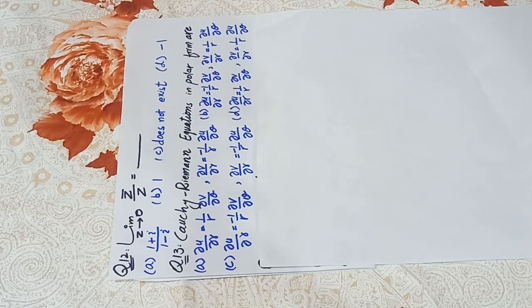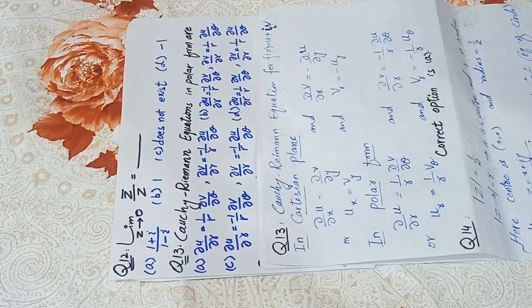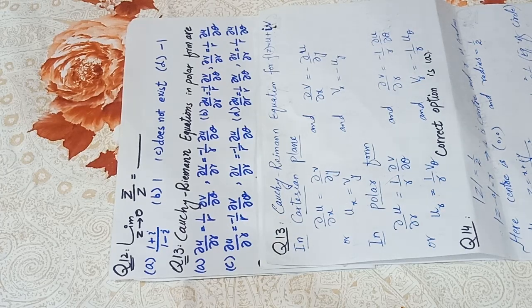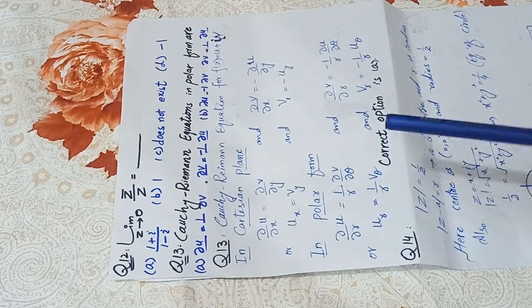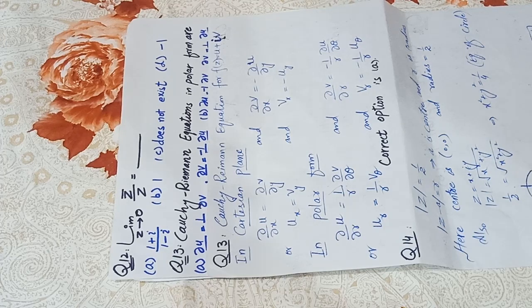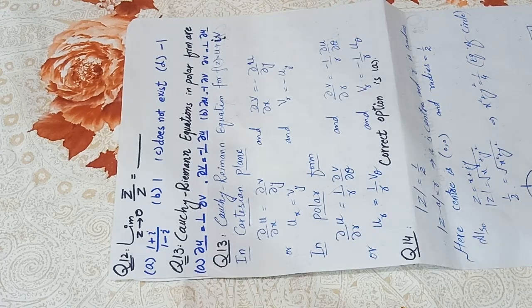Question 13: which option gives the Cauchy-Riemann equations in polar form? We know from complex analysis that if f(z) = u + iv, then in Cartesian form the CR equations are: ∂u/∂x = ∂v/∂y and ∂v/∂x = −∂u/∂y. In polar form, where u and v are functions of r and θ, they become: ∂u/∂r = (1/r) ∂v/∂θ and ∂v/∂r = −(1/r) ∂u/∂θ.